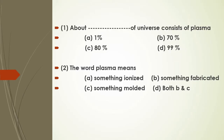The first MCQ is: what percent of the universe consists of plasma? Options are 1%, 70%, 80%, or 99%. The answer is 99 percent — 99% of the universe consists of plasma.